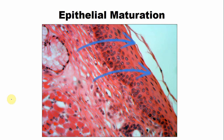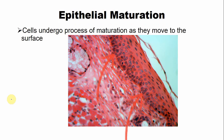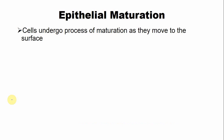Regarding epithelial maturation, the surface cells of the epithelium are lost naturally after some time by a process known as desquamation. The cells present in the basal layer undergo a process of maturation and move towards the surface, replacing the old cells by the normal process of desquamation. The maturation follows two main patterns.